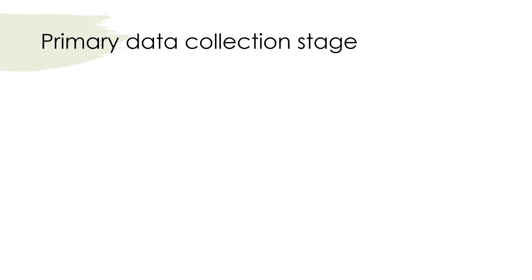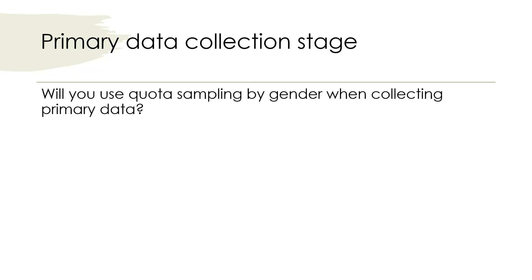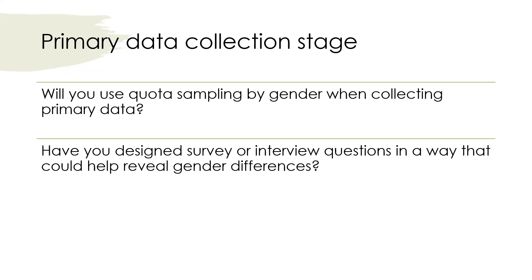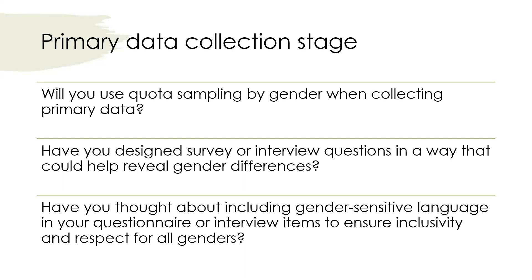These are some questions you could ask yourself at the data collection phase. Will you use quota sampling by gender when collecting primary data? If you are collecting data with human participants, it is likely that you need to do so. Have you designed survey or interview questions in a way that could help reveal gender differences? Think about the outcomes that could be gender-specific in your research, then add relevant questions to your questionnaires and interview items. Also, have you thought about including gender-sensitive language in your questionnaire or interview items to ensure inclusivity and respect for all genders? Make sure that your language is inclusive — in your proposal, questionnaire, interview items, and ethics statement.